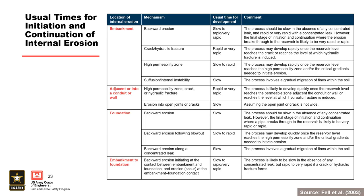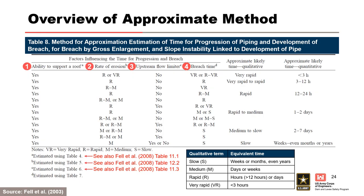This table presents usual times for initiation and continuation of internal erosion by location. Fell et al. 2003 developed an approximate method to estimate the time for progression of internal erosion and development of a breach in embankment dams. It is summarized for each of the four factors influencing time for development for progression and breach: the ability to support a roof, the rate of erosion, upstream flow condition, and breach time.